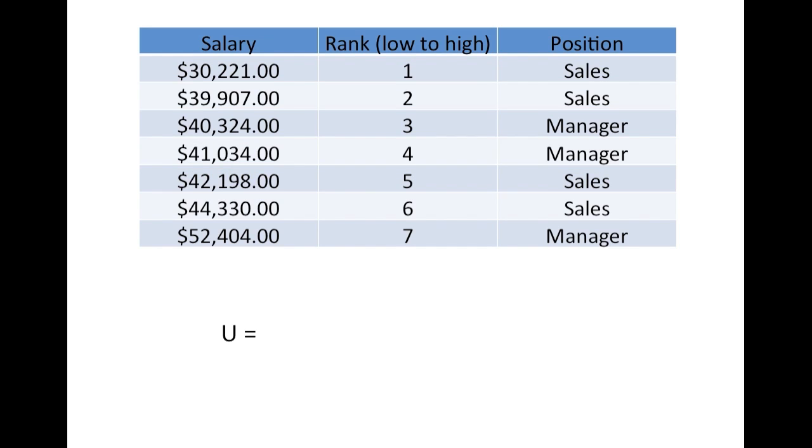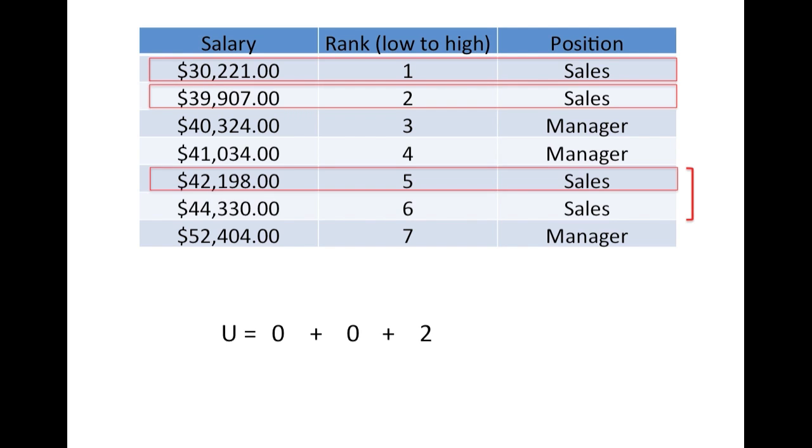To illustrate this point a little further, let's now imagine that we have two salespeople that each have a higher rank than two managers. Our U would be calculated as follows. Zero for the first salesperson, zero for the second, two for this salesperson, and two for this one, giving us a U of four.